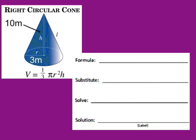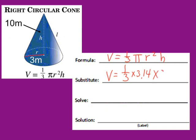This is the formula for finding the volume of a cone. The formula is: volume equals one-third times pi times radius squared times the height. Let's substitute in what we know — we'll do one-third times 3.14 for pi, times the radius squared. Our radius is 3, and the height is 10.